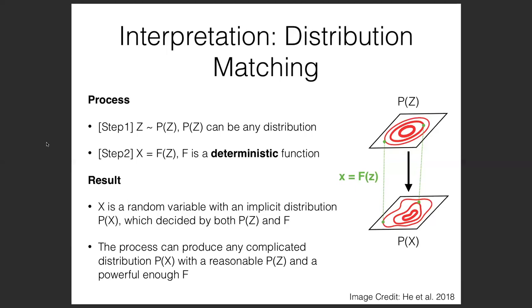This also means you could theoretically evaluate the likelihood of examples using a GAN. To evaluate the probability of an example, you'd have to identify the z that generates x and calculate the probability density at that z. The problem is: first, this is non-trivial because you need some method of calculating z given x; second, empirically GANs don't seem to be extremely good likelihood estimators, so we usually don't use them for this purpose.